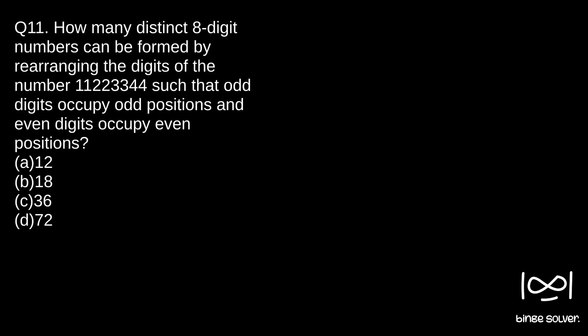Next question. Question 11. How many distinct 8-digit numbers can be formed by rearranging the digits of the number 11223344 such that odd digits occupy odd positions and even digits occupy even positions?